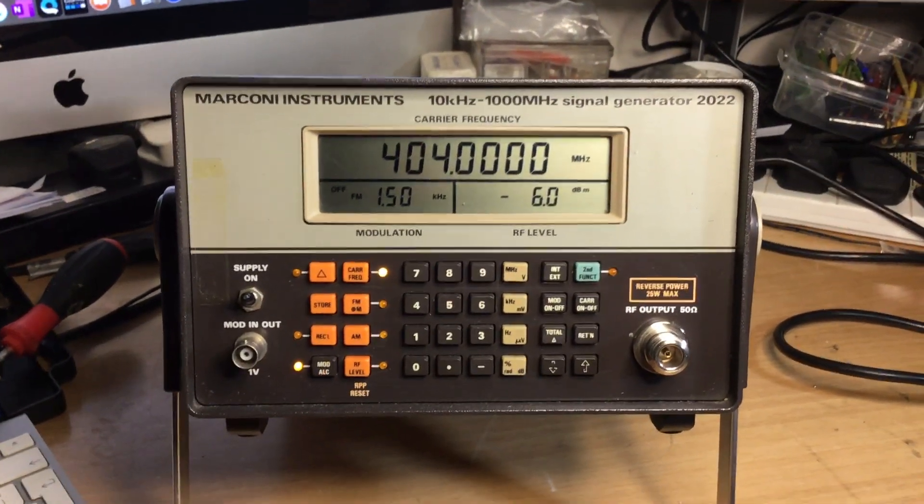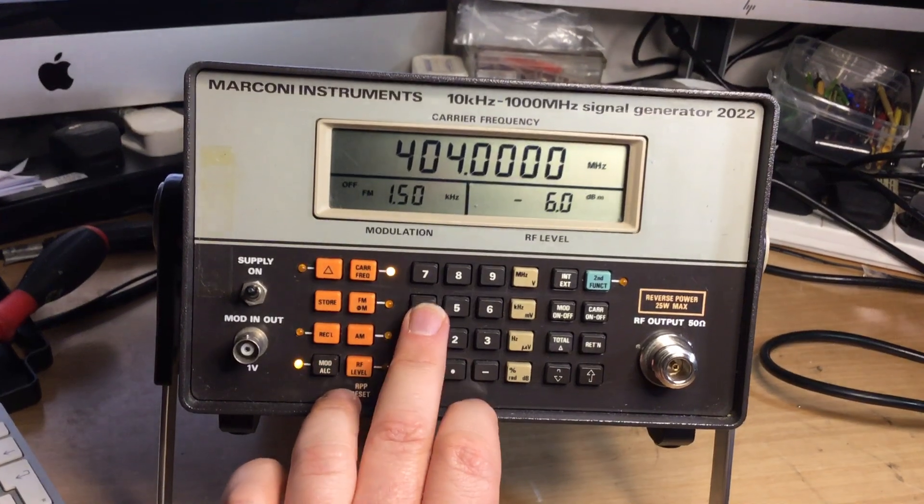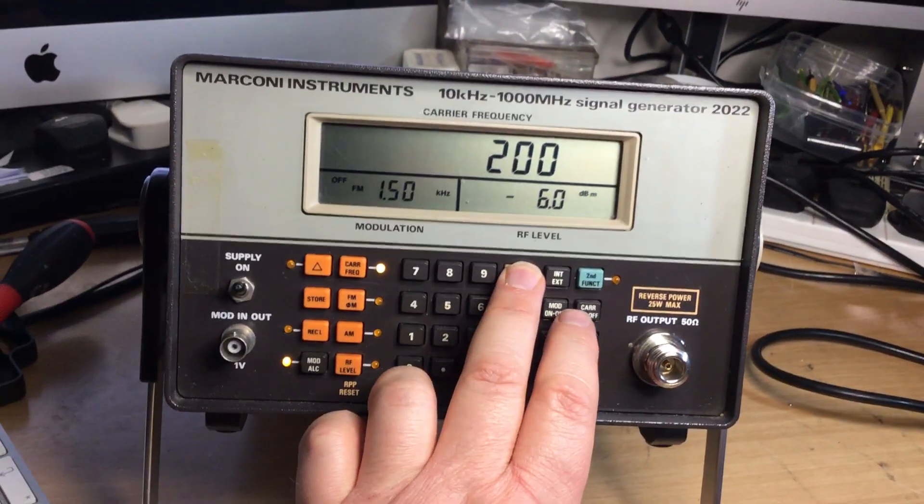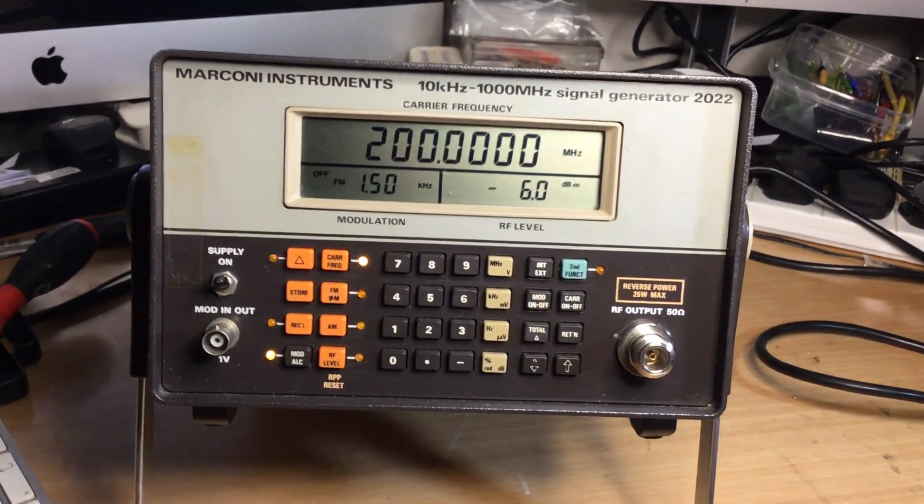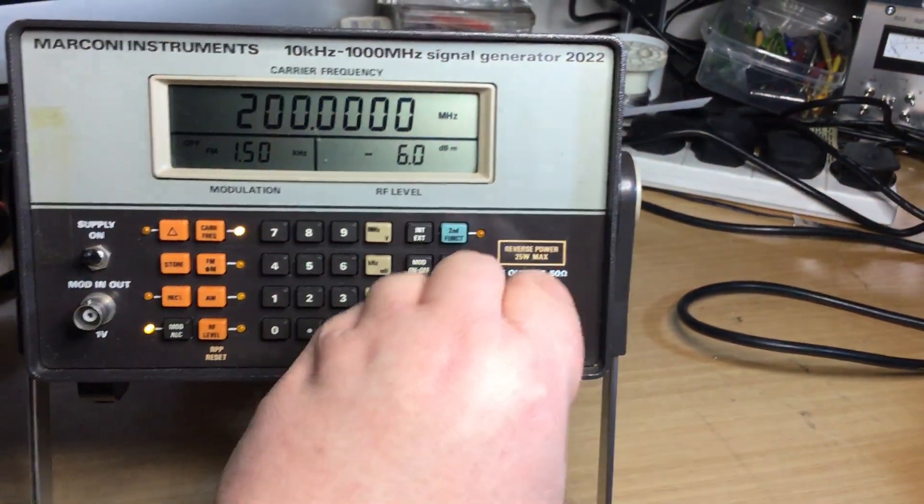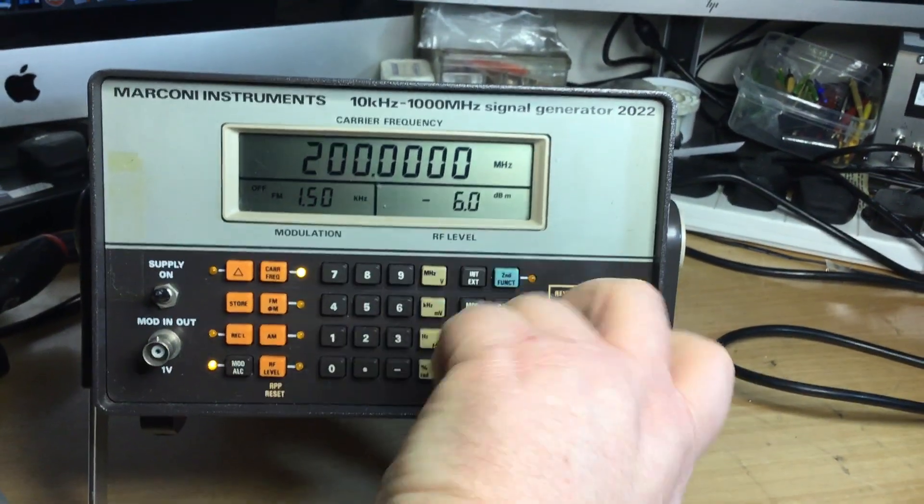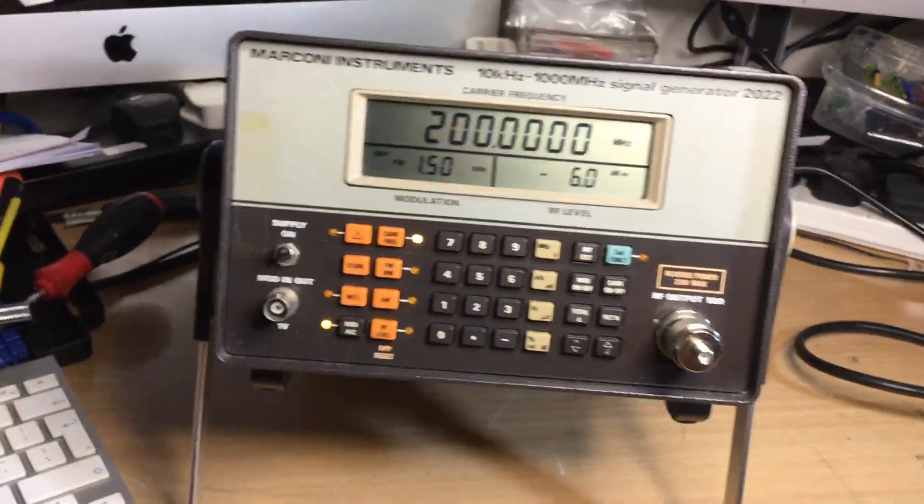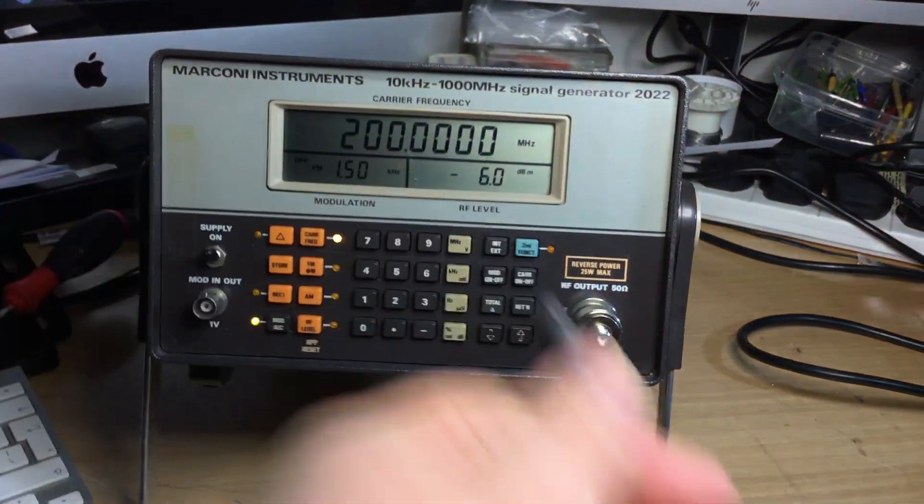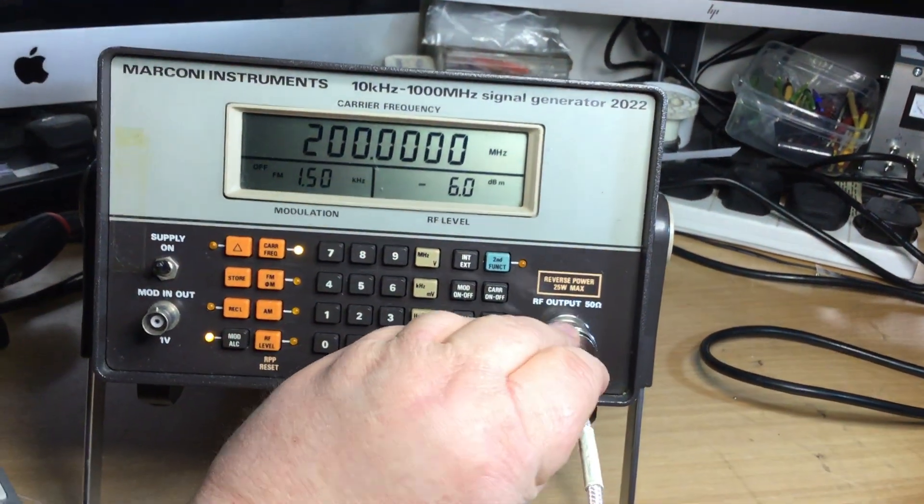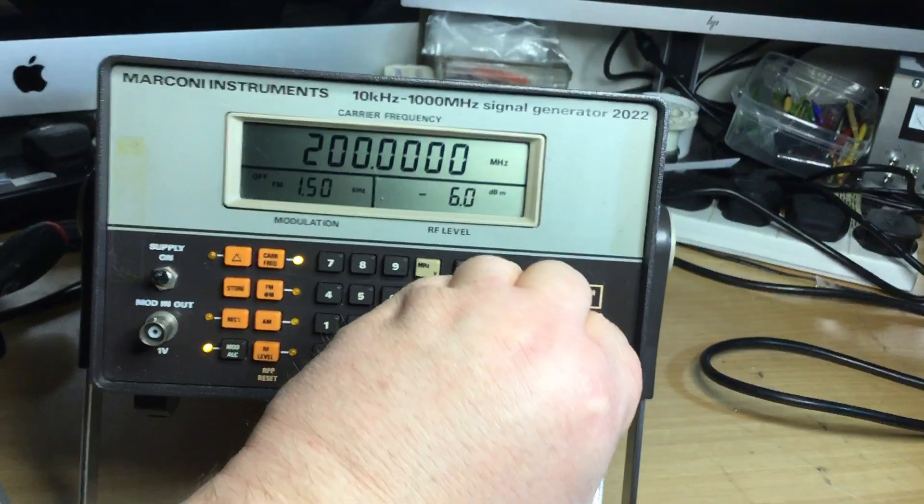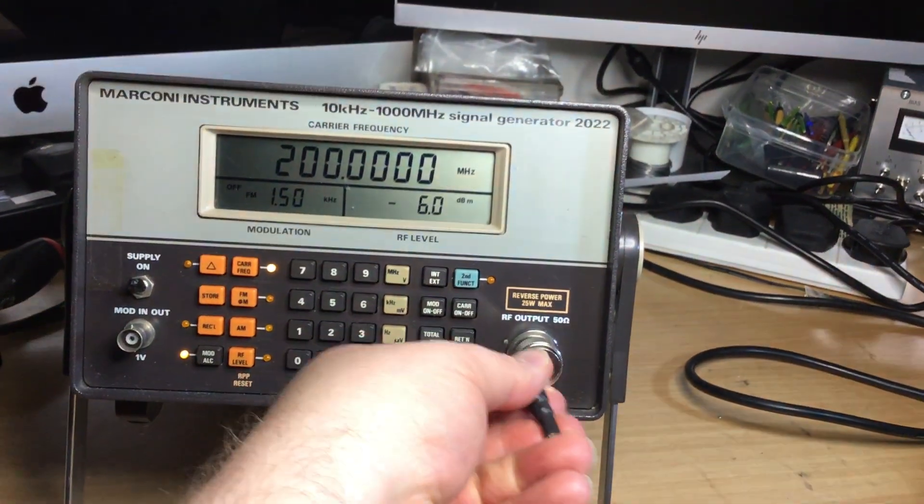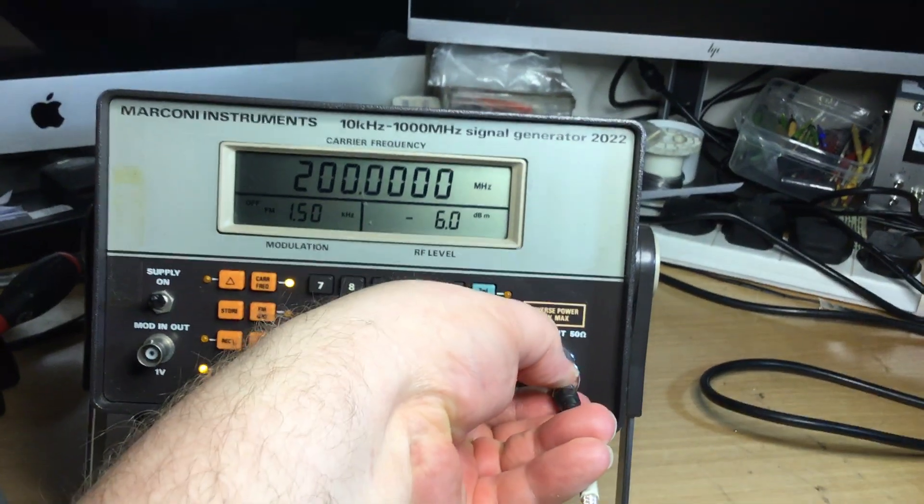Looking at it on a spectrum analyzer, if I were to put in say 200 megahertz frequency and then connect up the spectrum analyzer to it, it's quite spectrally pure. But as well as that, it's quite a neat RF output on it. It's quite responsive. The moment you select a frequency or a level, it's straight there. There's no sort of delay with it.